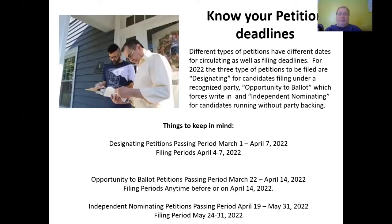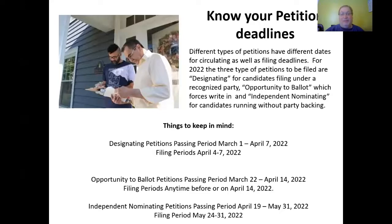And then, of course, the independent nominating petitions are for people who are not part of the Democratic, Republican, Conservative, or Working Families parties and do not want to run on those lines. They want to run on a party name that they decide. We may see that this year with the governor's election, with parties like the Libertarian, Green, and Independence Party all threatening to get back on the ballot. We'll know on May 31st which parties are trying to get back on the ballot, and we'll go over that more when we do a preview of the primary election.